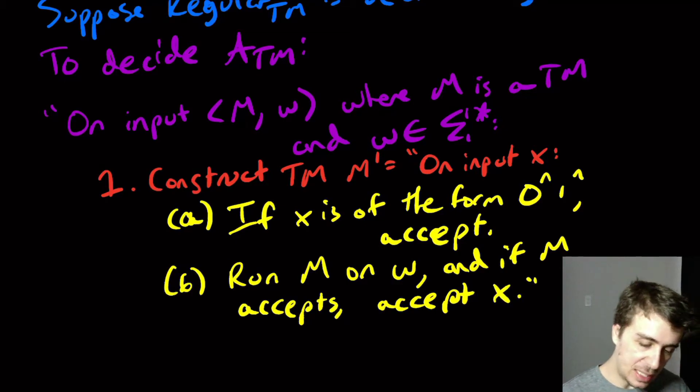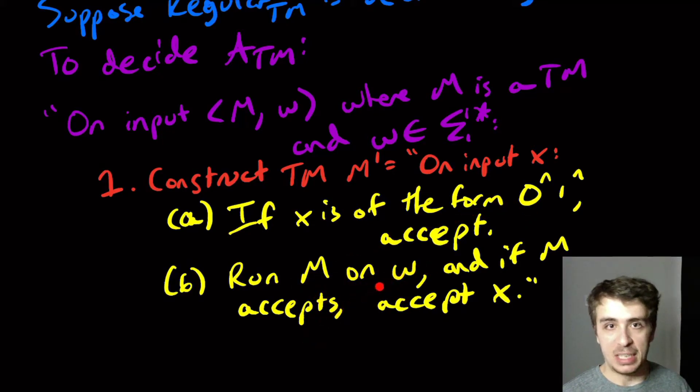This says that if nothing happens in step B, then we have the language 0^n 1^n, which is not regular. But if the string X is not of that form, it goes to this step, and it will only be accepted if M accepts W.